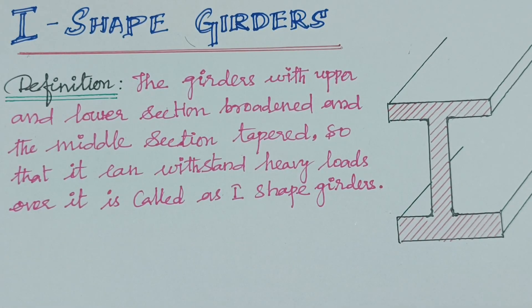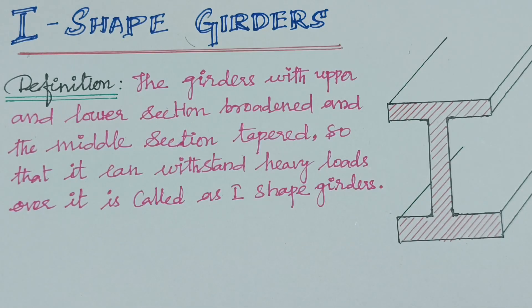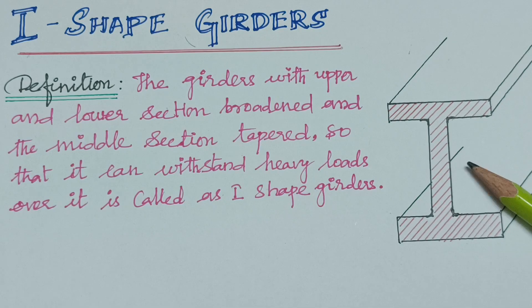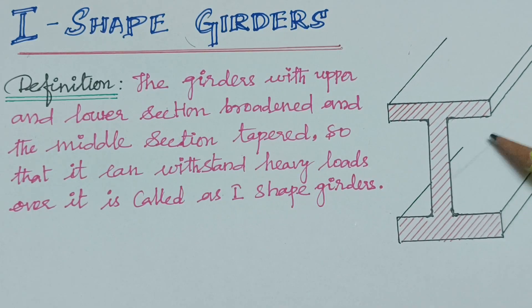Why do we use this I-Shape Girder for construction? The girder is supported at its two ends on the opposite walls. When a load is applied, the beam bends and a small depression is produced at the middle portion.